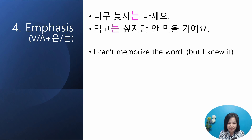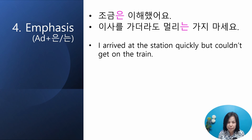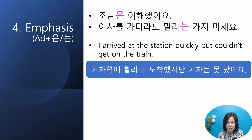Second, the case of 은/는 added to a verb or adjective ending: 너무 늦지는 마세요 — don't be too late. 먹고는 싶지만 안 먹을 거예요 — I want to eat but I will not. Your turn: 'I can't memorize the word': 저는 그 단어를 외우지는 못해요. Third, added to an adverb: 조금은 이해했어요 — I understood a little. 이사를 가더라도 멀리는 가지 마세요 — even if you move, don't go far. Your turn: 'I arrived at the station quickly but couldn't get on the train': 기차역에 빨리는 도착했지만 기차는 못 탔어요.